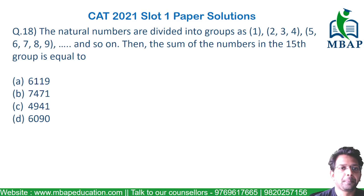The next question is from AP, possibly a series and sequence based question. The question says the natural numbers are divided into groups: group 1 is {1}, group 2 is {2, 3, 4}, next is {5, 6, 7, 8, 9}, and so on. The question asks to find the sum of numbers in the 15th group.